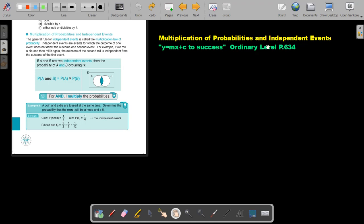Multiplication of probabilities and independent events. You will find this on page 634 in the Namibia Ordinary Level Mathematics textbook Y equals MX plus C to success.